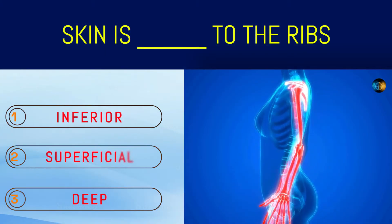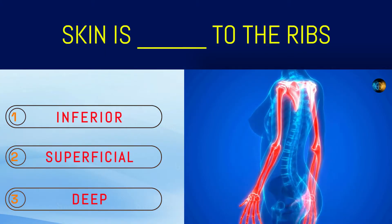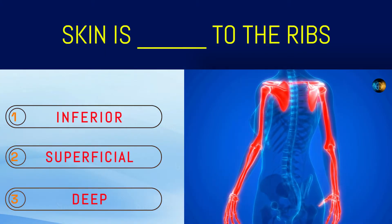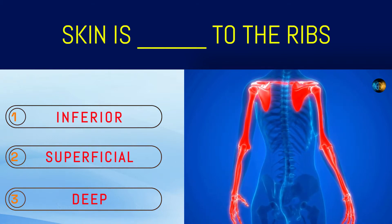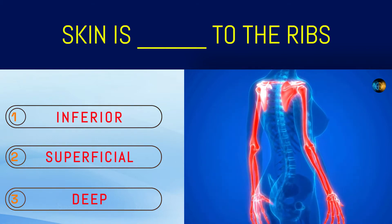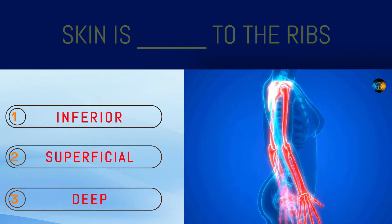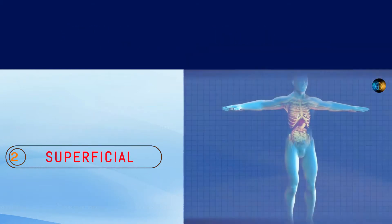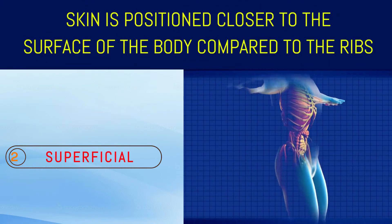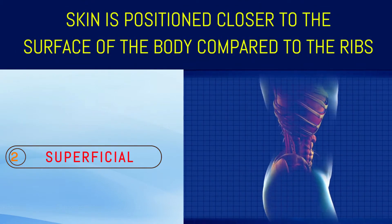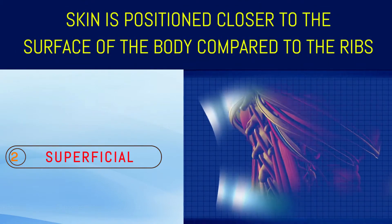Skin is what to the ribs? Inferior, superficial, or deep? Superficial. Skin is positioned closer to the surface of the body compared to the ribs.